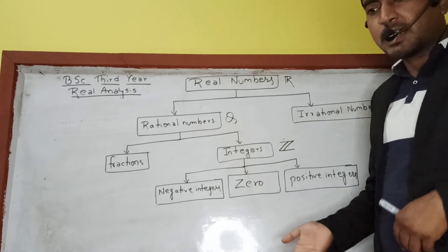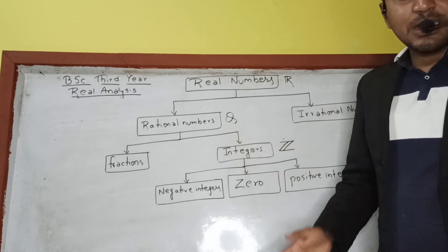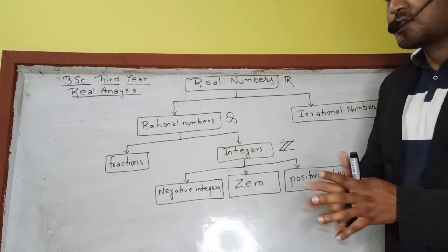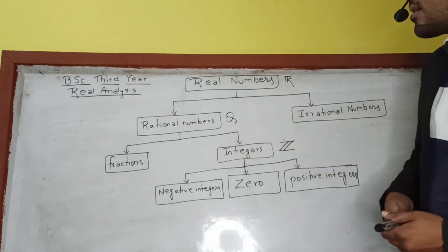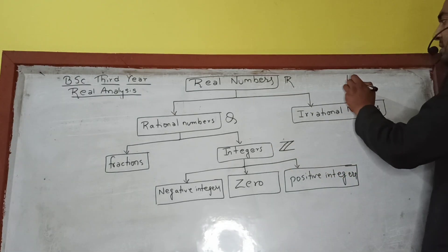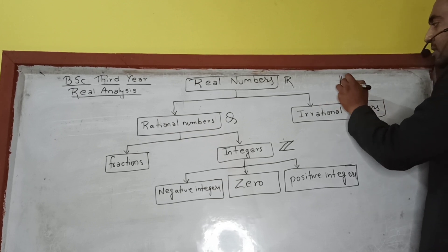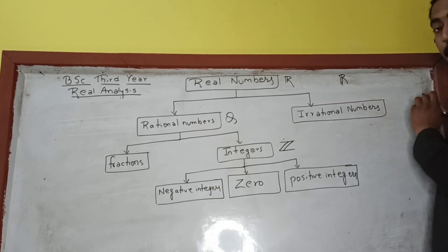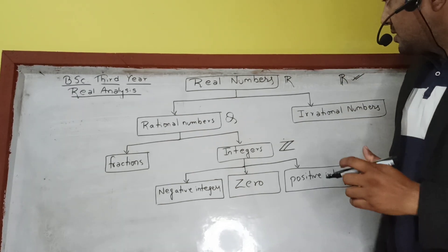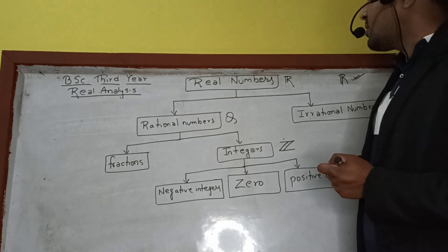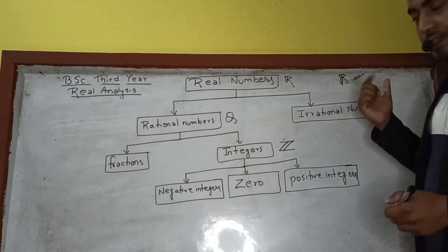Real numbers are of two categories: rational numbers and irrational numbers. The rational number is the first category — numbers which can be expressed in the form p/q, where q is not equal to zero. These are rational numbers.